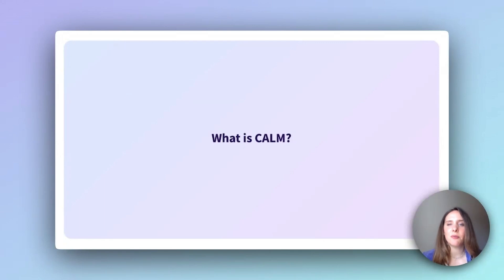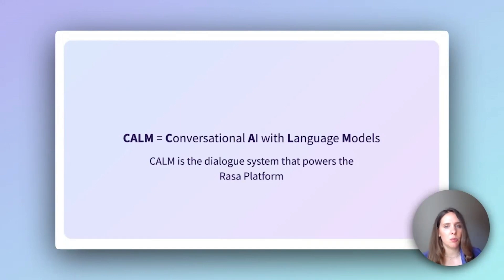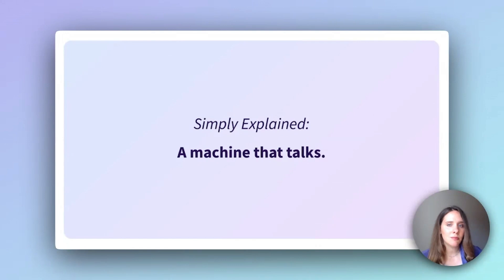Let's start with the basics and some key vocabulary that we'll need for the rest of this video. CALM stands for Conversational AI with Language Models, and it's the name of Rasa's dialogue system. A dialogue system is defined as a computer program that supports spoken, text-based, or multimodal conversational interactions with humans. Simply explained, a machine that talks.